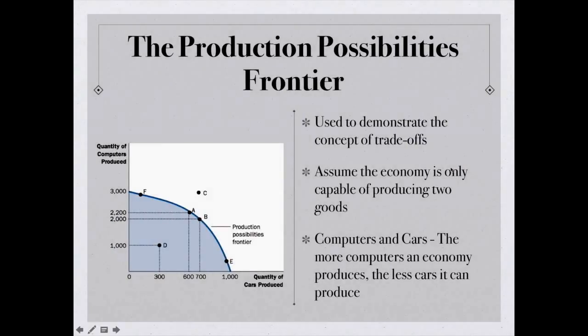The second economic model that we're looking at is the production possibilities frontier. The production possibilities frontier is used to demonstrate the concept of trade-offs. And the trade-off is the idea that to get something, you have to give up something else you want.